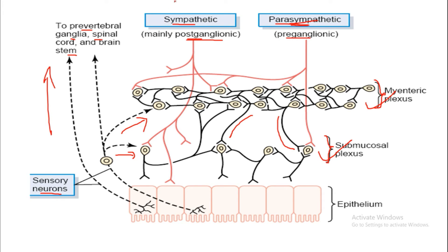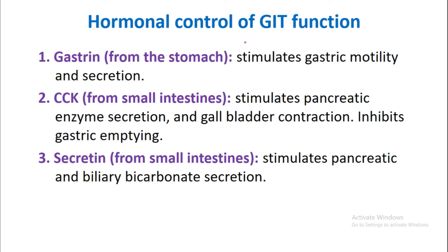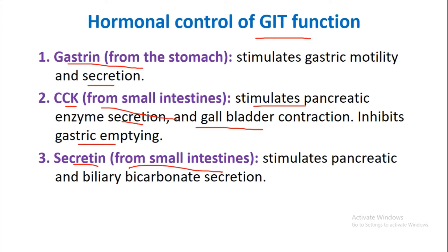Hormonal control of gastrointestinal functions involves three main hormones. First, gastrin from the stomach stimulates gastric motility and secretion. Second, cholecystokinin from the small intestine stimulates pancreatic enzyme secretion and gallbladder contraction, and inhibits gastric emptying. Third, secretin from the small intestine stimulates pancreatic and biliary bicarbonate secretion. These are the main three hormones controlling GI functions: gastrin, cholecystokinin, and secretin.